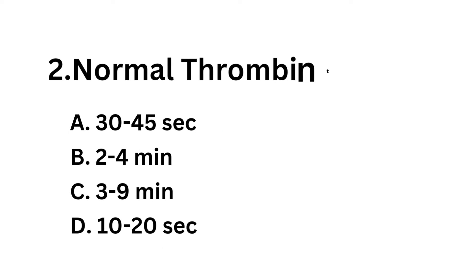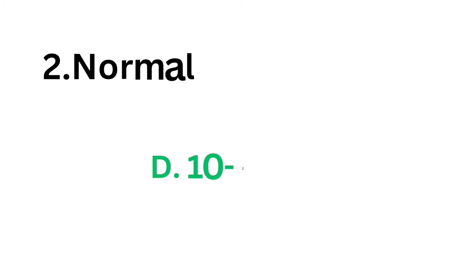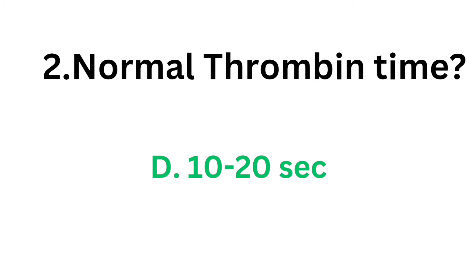Question number 2. Normal thrombin time. Option A: 30-45 seconds. Option B: 2-4 minutes. Option C: 3-9 minutes. Option D: 10-20 seconds. The correct answer is Option D, 10-20 seconds.